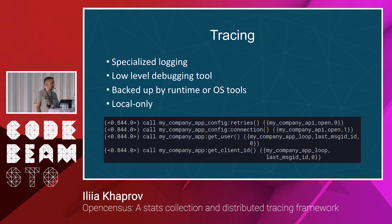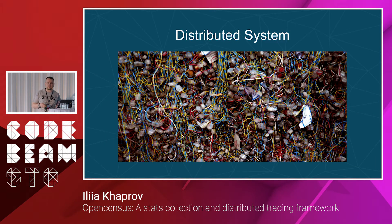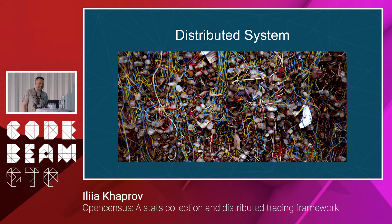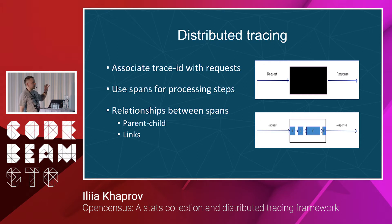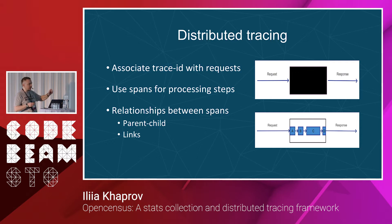If you have a distributed system where your computation spans across microservices, you will have to invent something. So this is how a distributed system looks. How do we jump from tracing to distributed tracing? We can associate a trace ID with requests. We can break down computation logically into spans — essentially metadata — which have relationships. And now instead of a black box, we can see internals and at a quick glance see where the most time is spent.